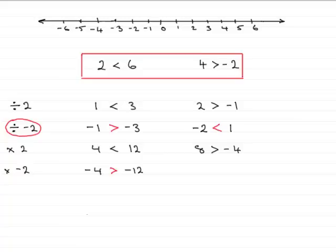And if I try this one, multiplying both sides here by negative 2, we get negative 8 and minus 2 times minus 2 is 4. And again, I now notice that minus 8 is much smaller than 4. So that would be less than. So the sign has had to be reversed when we multiply by a negative number.